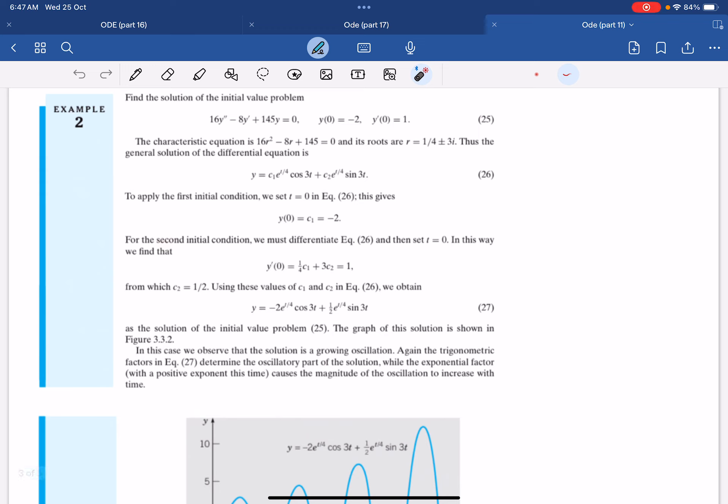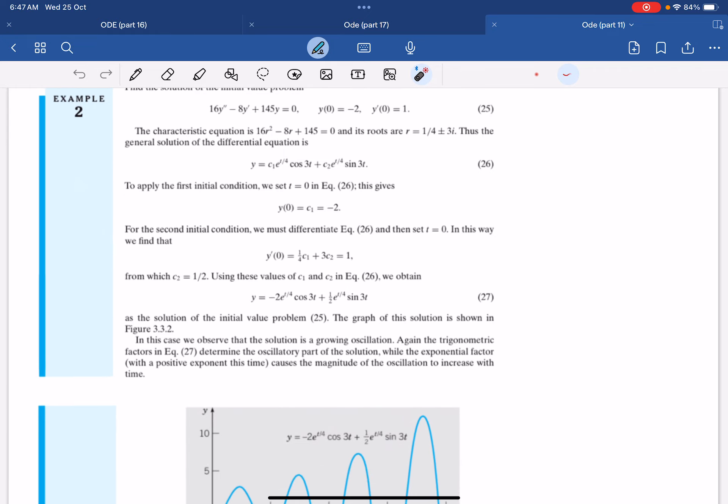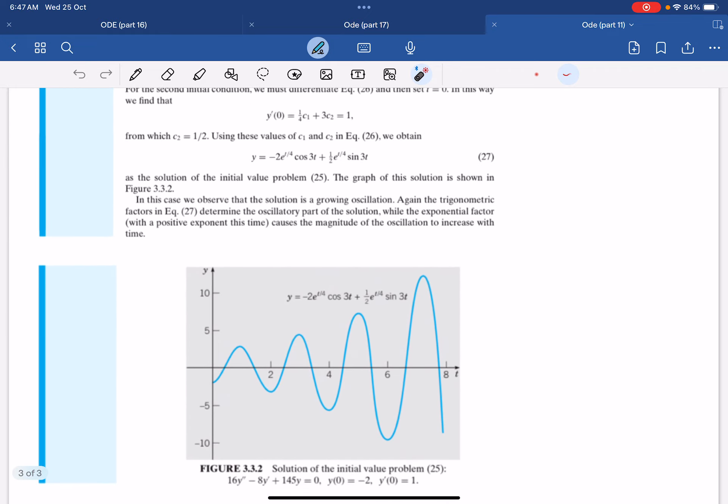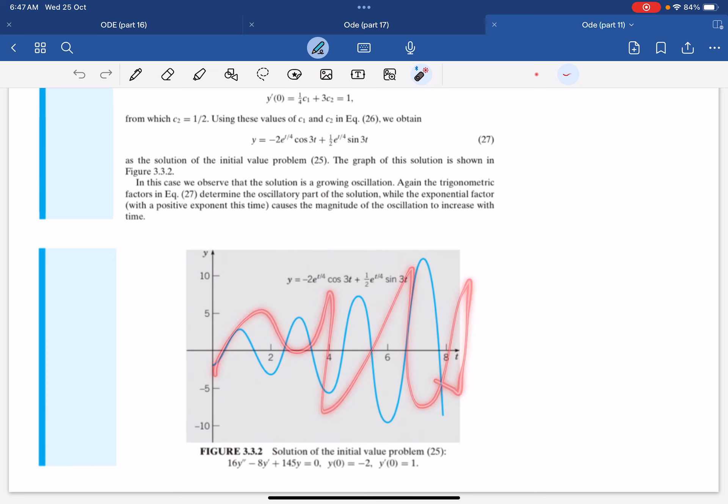And by applying the second initial condition, we get that c2 is half. So this will be the general solution to the IVP. And we can see how the graph looks like whenever we have such a solution.